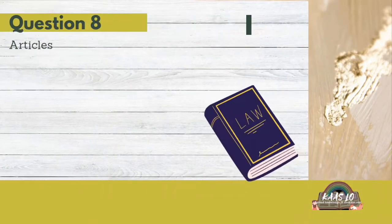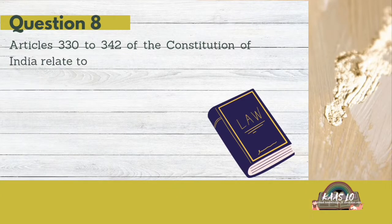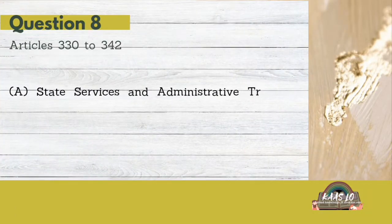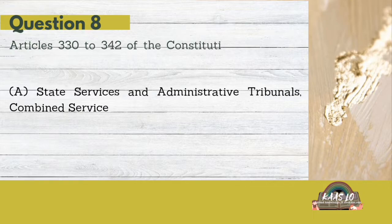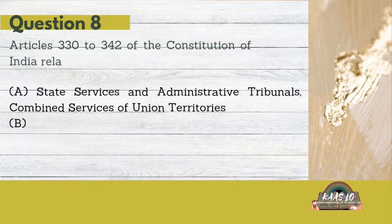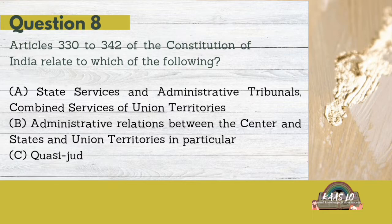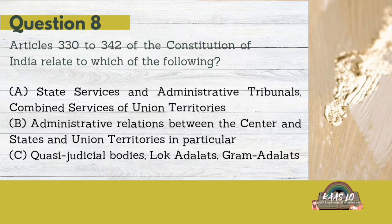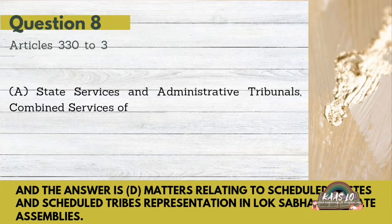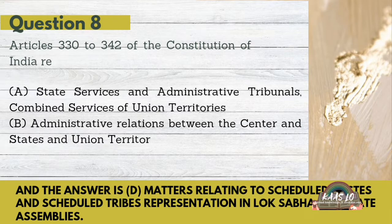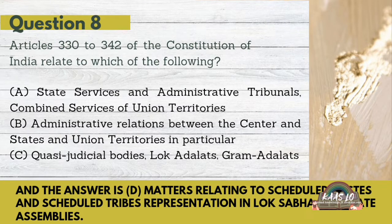Articles 330 to 342 of the Constitution of India relate to which of the following? A. State Services and Administrative Tribunals and combined services of Union Territories, B. Administrative relations between the Centre and States and Union Territories, C. Quasi-judicial bodies, Lok Adalats, Gram Adalats, D. Matters relating to Scheduled Castes and Scheduled Tribes representation in Lok Sabha and State Assemblies. The answer is D. Matters relating to Scheduled Castes and Scheduled Tribes representation in Lok Sabha and State Assemblies.